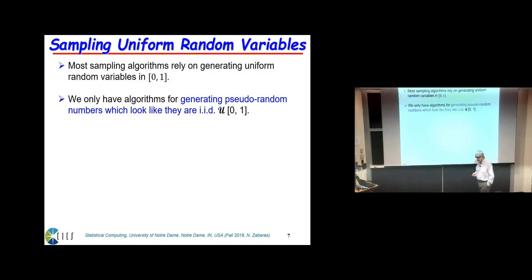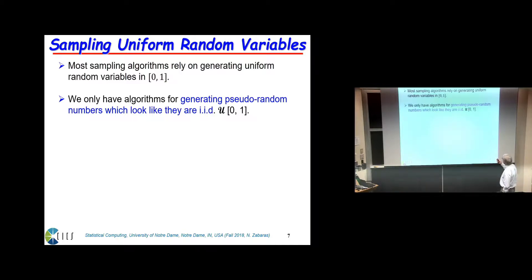Every random number generator is based, one way or another, on the assumption that we know how to sample from the uniform distribution. That is the most fundamental problem — there are many algorithms that generate what's called pseudo-random numbers, pseudo in the sense that most algorithms sampling from the uniform distribution are really deterministic. So let's assume we know how to sample from the uniform distribution, and I'll show you how by sampling from it you can eventually sample from any arbitrary distribution.